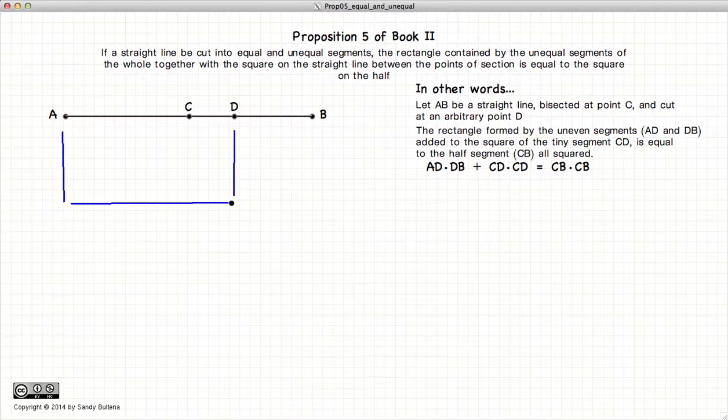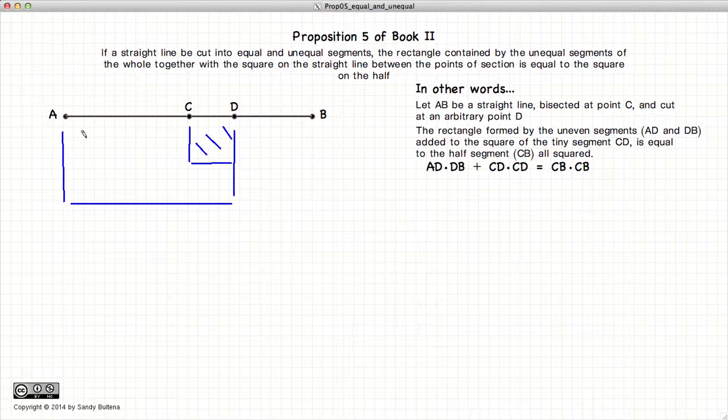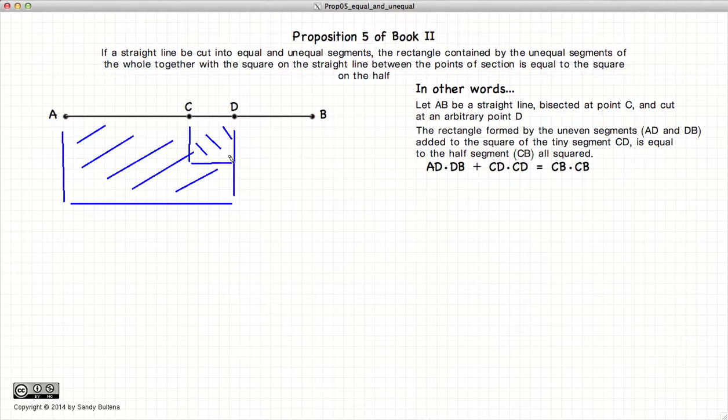so if this is length DB, this area plus the area of the square formed by CD, so this area plus this area, will be equal to the area formed by half of the line segment, in other words CB. So those two areas will equal this area.